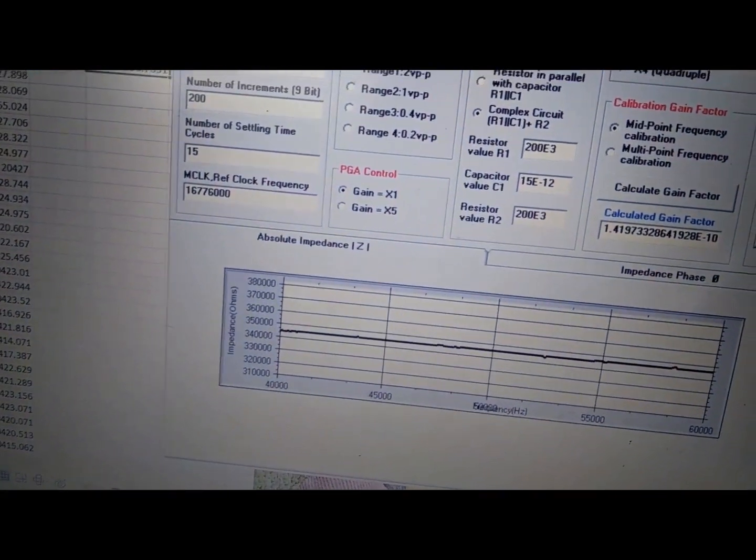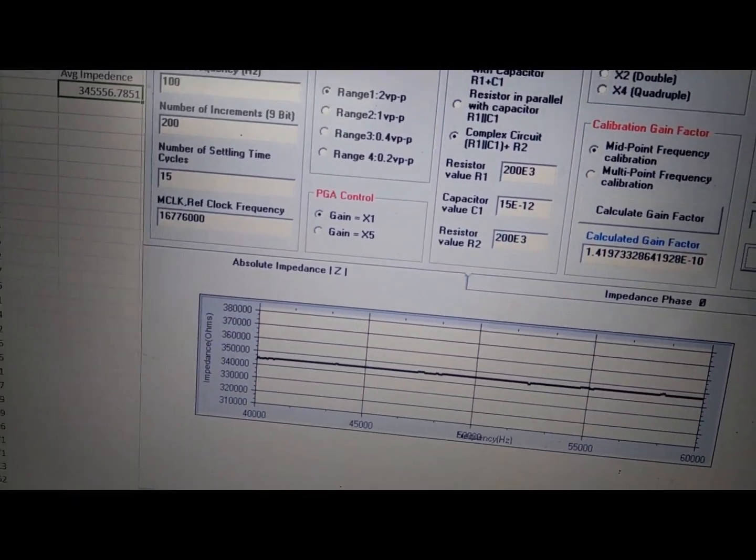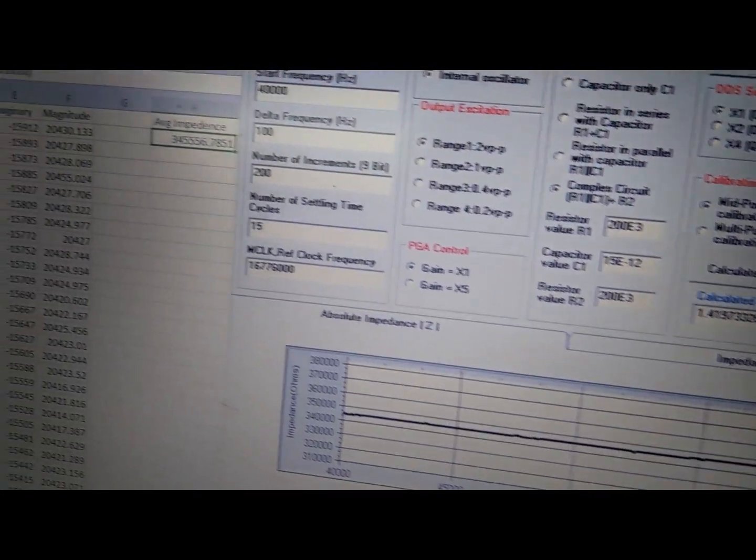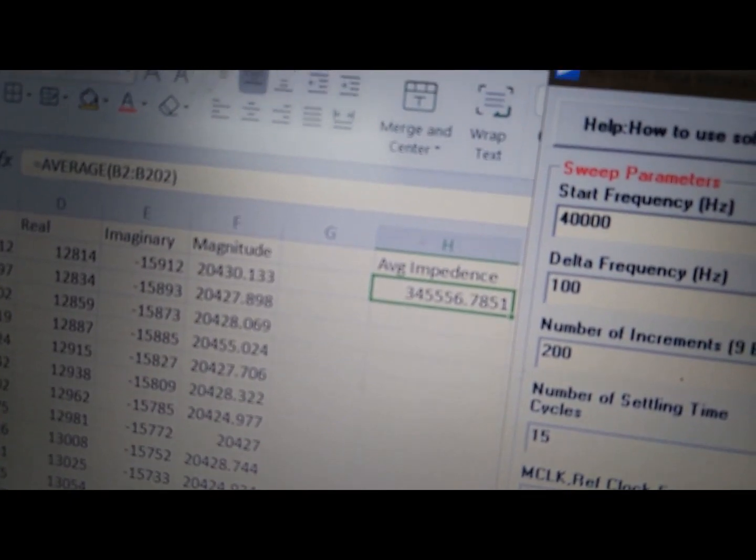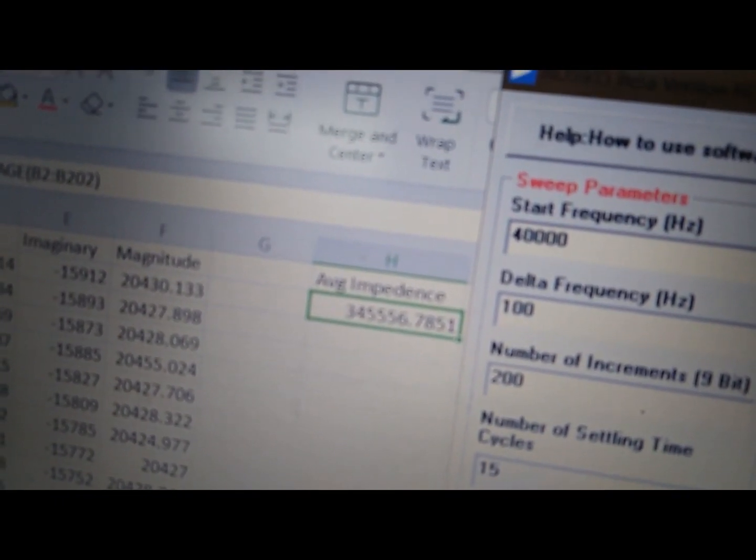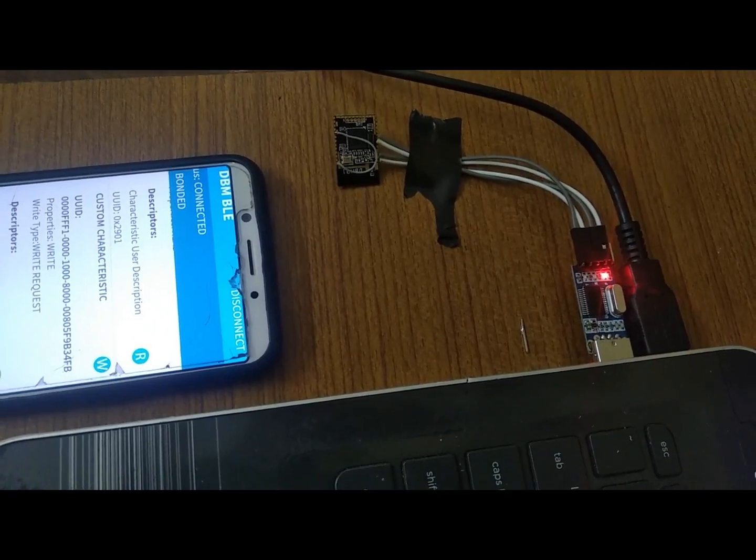The frequency sweep starting from 40 kHz to 60 kHz, keeping mean frequency at 50 kHz, can be seen on the graph. Taking average of all the impedance values, it can be seen that 34,556 ohms came out to be average impedance, which can be further displayed on the Android phone via Bluetooth module.